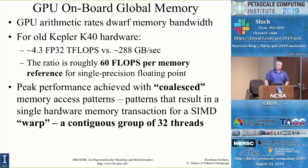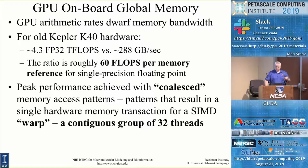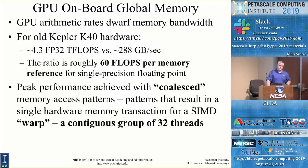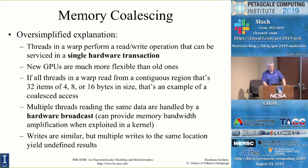The GPU memory controllers do have some flexibility. You can have a coalesced access whether it's an int, a float, a double, or compound types like float4, a small four-element vector. As long as you meet that requirement, you will approach peak memory bandwidth. There are some small details, but that gets you say 90% of the way there. The rest is just avoiding other little details that would slow your code down.